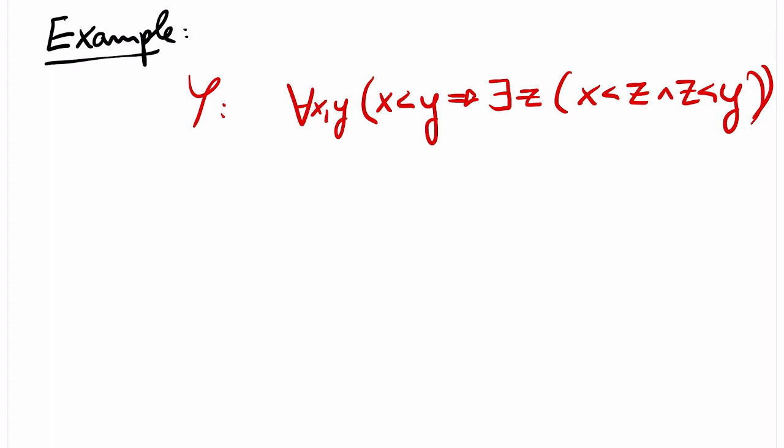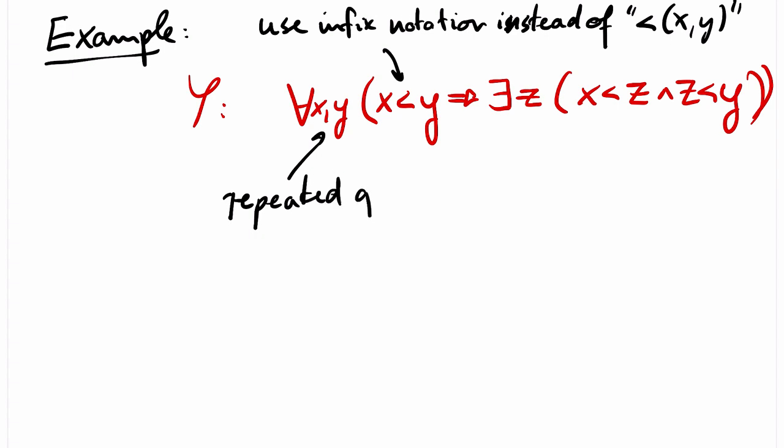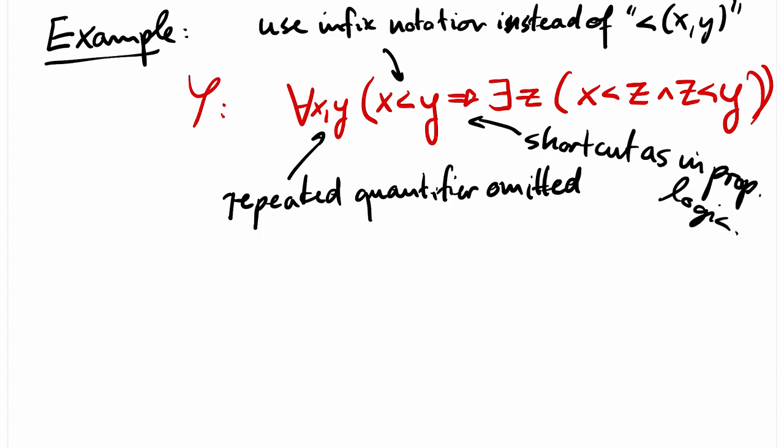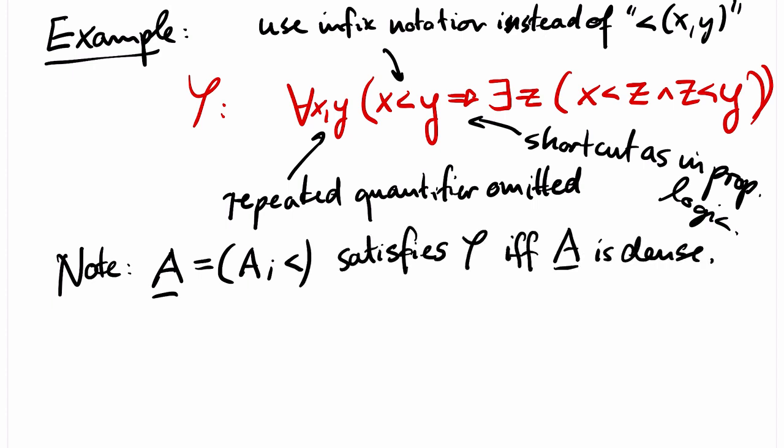Let's have a look at an example. Suppose that phi is the formula for all x, y such that x is strictly smaller than y, there exists a z that lies strictly between x and y. For the strictly smaller than relation, we typically use infix notation. Also, very often we omit repeated quantifiers of the same type. The implication symbol is just a shortcut as in propositional logic. Note that a structure that carries a linear order satisfies this sentence if and only if the order is dense. So the usual order of the rationals satisfies this sentence, while the usual order of the integers does not.